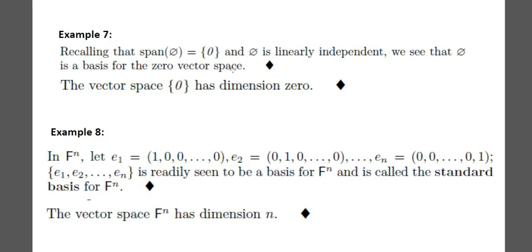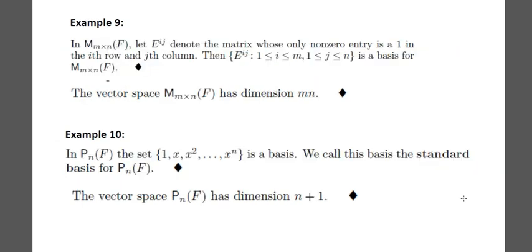Let us see some examples. The trivial vector space {0} has basis φ (the empty set), since span of φ is {0} and φ is linearly independent, so dim({0}) equals 0. For F^n (n copies of F), the standard basis is E1, E2, ..., En, so dimension of F^n is n.